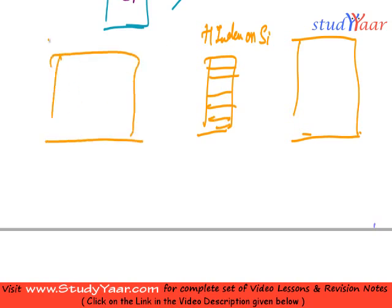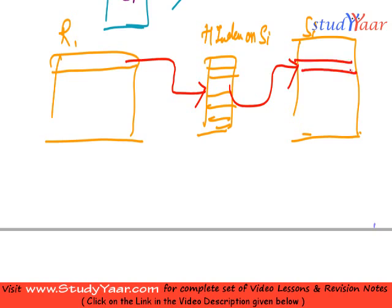So what we do is take a tuple in RI, find the corresponding index entry, and then find the corresponding SI tuples which match